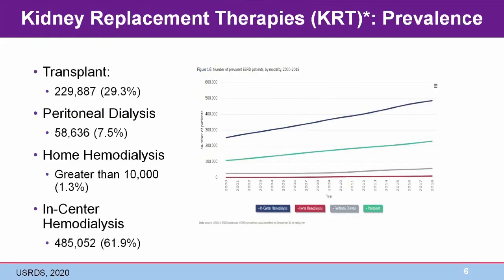The United States Renal Data System, the USRDS, is a reliable source of data about the demographics and care of CKD patients, including those with kidney failure receiving kidney replacement therapy. The prevalence of kidney failure is on the rise. While the majority of kidney failure patients were on dialysis at the end of 2018, almost one-third of the total prevalent population was successfully transplanted, a testimony to the superiority of this therapy. The total prevalent population receiving kidney replacement therapy on the last day of 2018 was over 783,000.